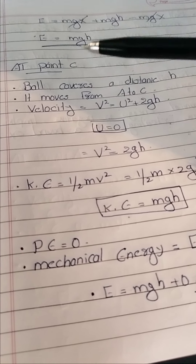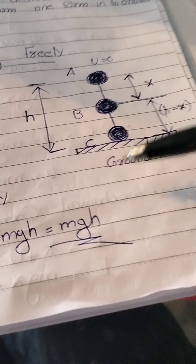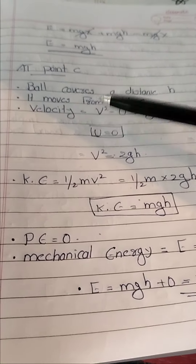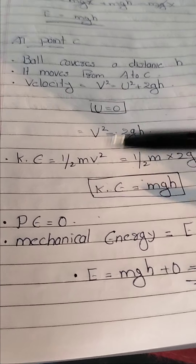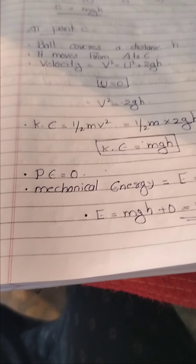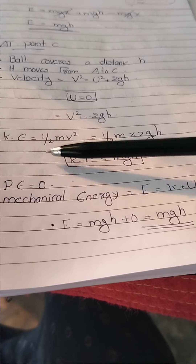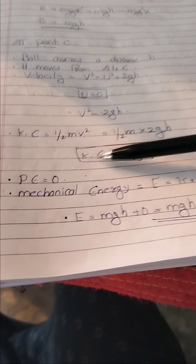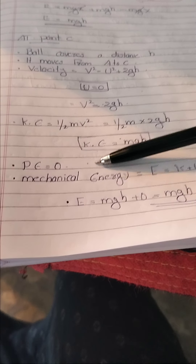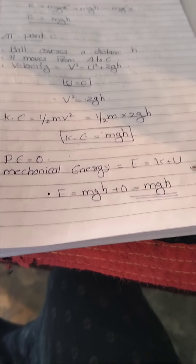At point C, the ball has covered the full distance h and touched the ground. Using v squared equals u squared plus 2gh with initial velocity zero, we get v squared equals 2gh. Kinetic energy equals half mv squared equals half m times 2gh, which simplifies to mgh. At the ground, height is zero, so potential energy equals zero. Therefore total mechanical energy equals mgh plus zero equals mgh.